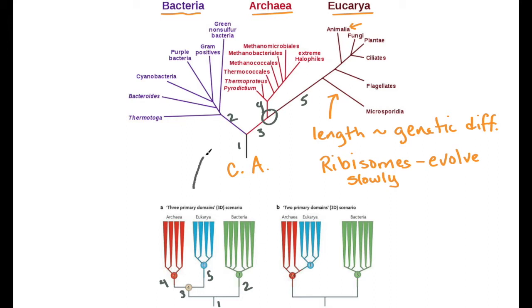This tree is the same as the one up here. You have the common ancestor, and then you have the branch point going to the archaea and the eukaryotes versus the bacteria, then you have a branch point between the archaea and the eukaryotes. But when scientists started looking at more genes beyond just the ribosomal genes or ribosomal RNA that Woese looked at, they started to think that the eukaryotes actually might be descendants from the archaea.